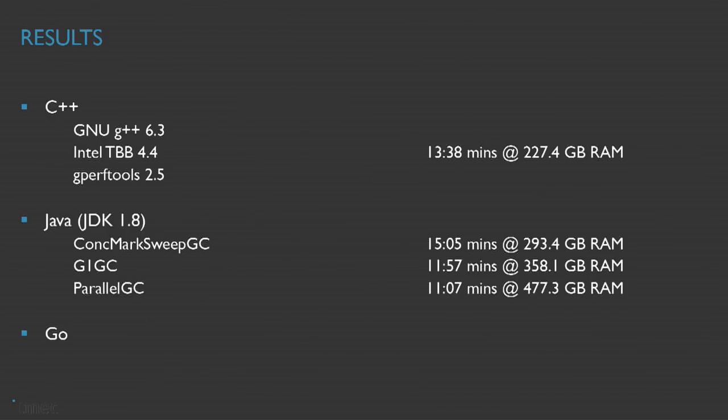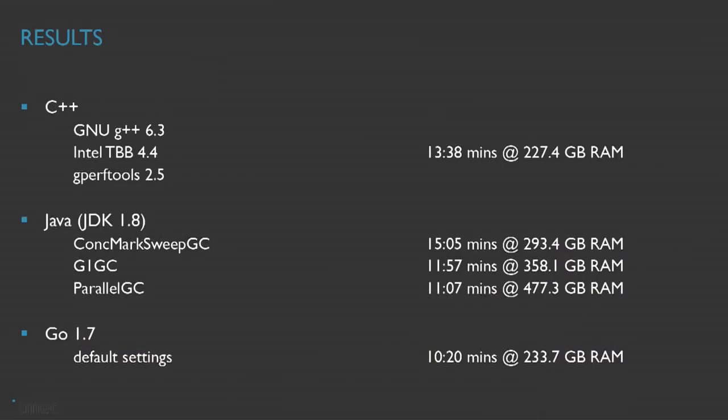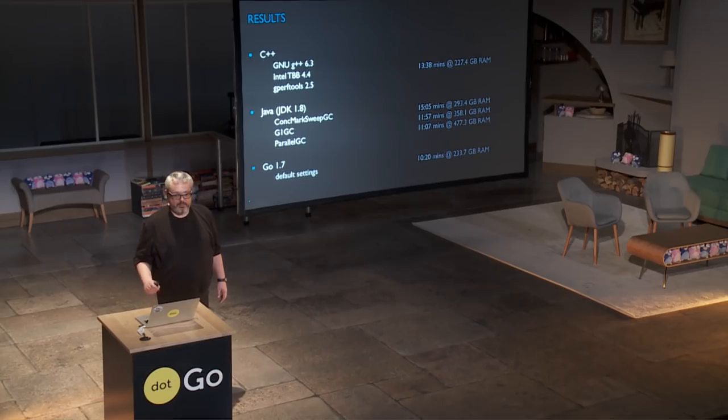With Java, it looks worse. There are different garbage collecting options for Java, but if it's faster, it uses a ridiculous amount of memory which can't be used, and if it's slower, it still uses a large amount of memory — so that doesn't really count. With Go, using the default settings in 1.7, we got 10 minutes 20 seconds at an amount of RAM that's very close to the lowest. We were very happy with that, and that's why we moved our L-Prep tool to Go and published it as open source one month ago.